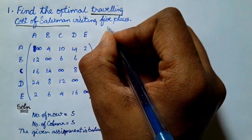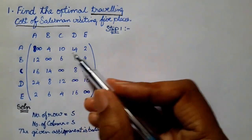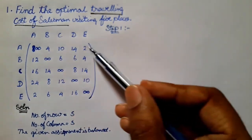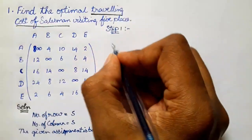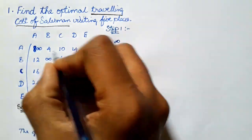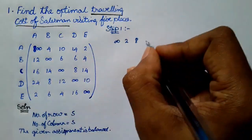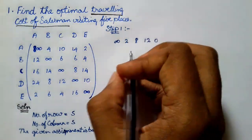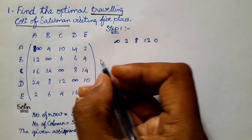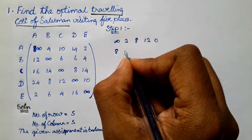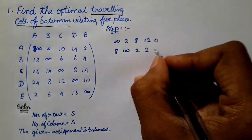Next, Step 1: we will take the normal assignment and do row-wise reduction to get zeros. Looking at the first row, 2 is the smallest, so we subtract 2. Infinity minus 2 stays infinity, 4 minus 2 is 2, 10 minus 2 is 8, 14 minus 2 is 12, and 2 minus 2 is 0. For the second row, 4 is the least, so 12 minus 4 is 8, infinity stays, 6 minus 4 is 2, and 4 minus 4 is 0.